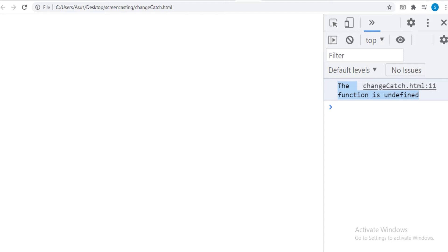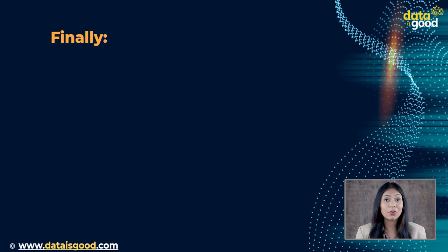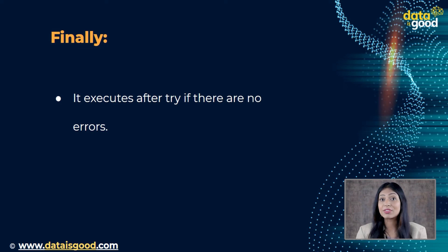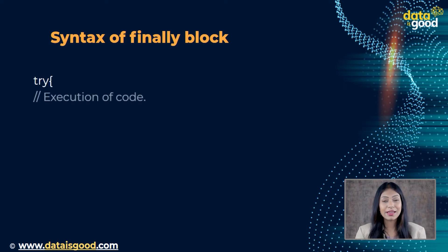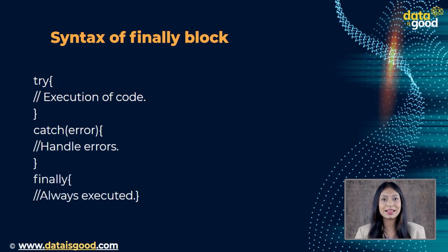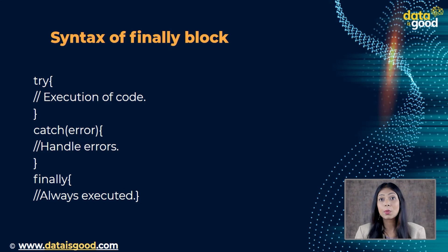Moving on to the finally block. After try and catch, there is another block of code that runs regardless of the result. That means it executes after try if there are no errors, and it executes after the catch method if there are any errors. Syntax: try — execution of code; catch(error) — handle errors; finally — always executed. The finally clause is often used when we start doing something and want to finalize it whether the outcome is wrong or right. Note that variables are always local in the try-catch-finally.